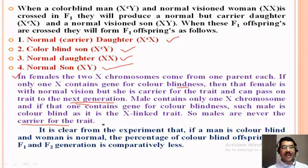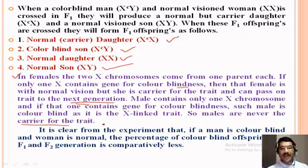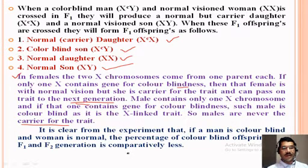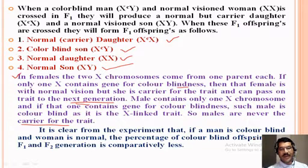In females there are three phenotypic possibilities: normal female, carrier female, and color blind female. It is clear from this experiment that if a man is color blind and the woman is normal, the percentage of color blind offspring in F1 and F2 generations is comparatively less.